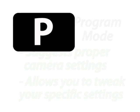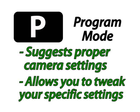P — the P mode stands for program mode, and it is a lot like your full auto dummy mode. The difference being that you can select your ISO, you can select your white balance, you can select your metering, you can change your exposure compensation. It's sort of like taking the training wheels off a little bit.